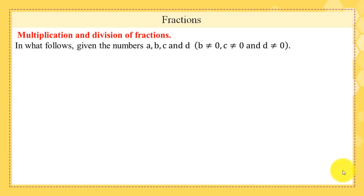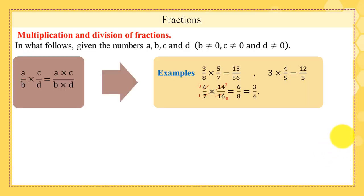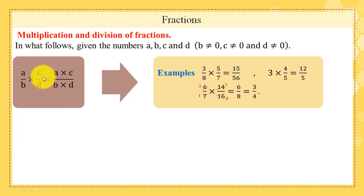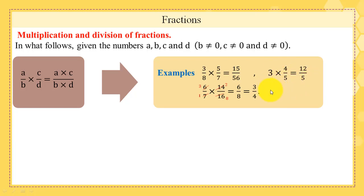Now we continue with multiplication and division of fractions. First, multiplication: (a/b) × (c/d) = (a×c)/(b×d). We multiply numerators by each other and denominators by each other. Example: 3/8 × 5/7 = (3×5)/(8×7) = 15/56. Similarly, 3 × 4/5 = (3×4)/(1×5) = 12/15.